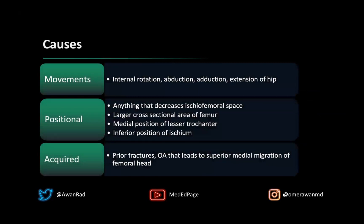There are many causes of ischiofemoral impingement, most related to movement, positional, and acquired factors. Anything that decreases the ischiofemoral space can result in this condition — patients internally rotating, abducting their hip over time, a larger cross-sectional area of the femur, a lesser trochanter that is too medial, or an ischium that is too inferior. It can also be acquired from fractures that decrease the space. Osteoarthritis, when you get superior medial migration of the femoral head, can alter weight-bearing mechanics and decrease the space, ultimately resulting in ischiofemoral impingement.